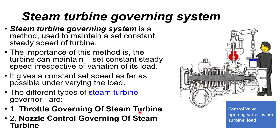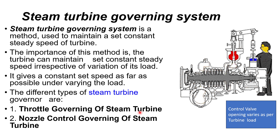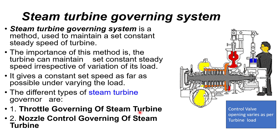The turbine governing system is a method used to maintain a set constant speed of the turbine. The importance of this method is that the turbine can be maintained at a set constant speed irrespective of variation, giving a constant set speed under varying load conditions. The different types of turbine governors are throttle governing and nozzle governing. When the valve opens, steam increases the speed of the turbine, and when turbine speed goes up due to reduction in load, this valve will start throttling and control the speed.